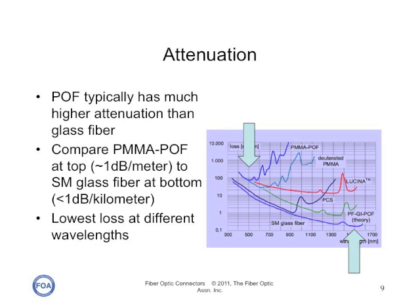Notice the difference in the wavelength where the attenuation coefficient of each fiber is the lowest. The PMMA POF has its lowest attenuation in the red part of the spectrum, where red LEDs and lasers are typically used as transmission sources. While single-mode glass fiber has its lowest attenuation somewhere out around 1500 to 1600 nanometers, where lasers are used in the far infrared region to get the longest reach for high-speed single-mode systems.